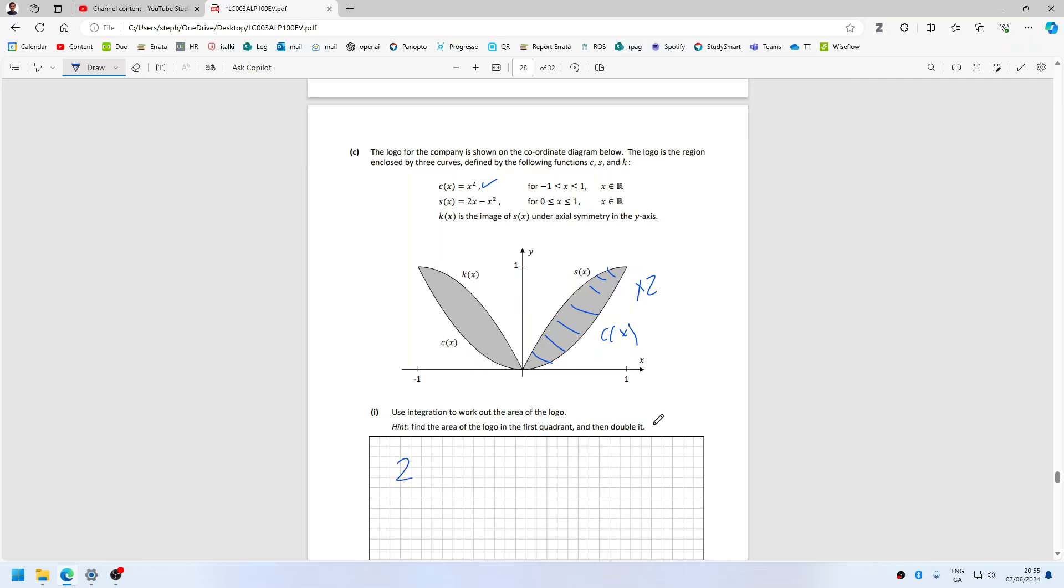Oh, it actually even gives you the hint. Integration from 0 to 1, 2x minus x squared minus x squared. That's the C, that's the S, and then that's the C.